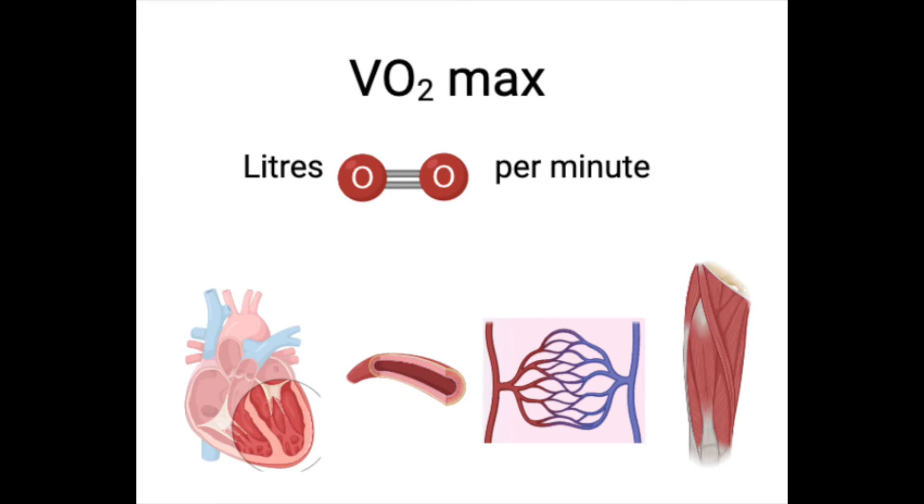In the simplest way, VO2max is the total amount of oxygen that our bodies can uptake and utilize during maximal intensity exercise. Usually it's measured in liters per minute.